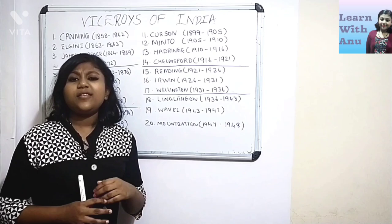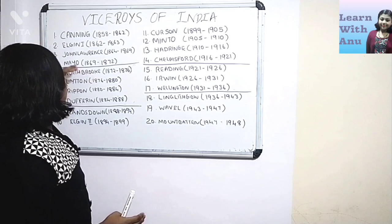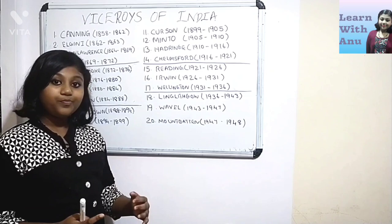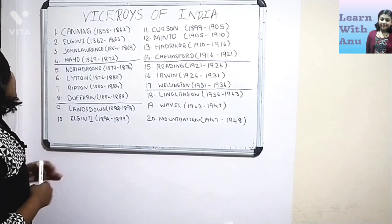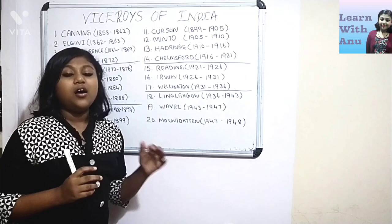You might be wondering why I have jumped from the first four — that's up to Mayo — to Linlithgow, skipping the last third of the Viceroys. There's a secret behind this: from the fifth Viceroy to the seventeenth Viceroy, we have a small clue to learn the tenures of rule.